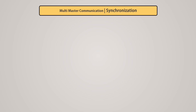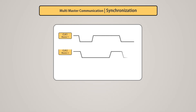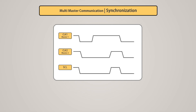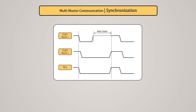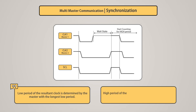The procedure to synchronize clock signals of two or more master devices is called synchronization. Like the SDA line, the SCL line is also logic high due to the pull-up resistor and acts as a wired-AND. When master 1 pulls the clock low before master 2, SCL becomes low. After master 2 also pulls the clock low, master 1 must wait until master 2 releases SCL before it can go high. The low period of the resultant clock is determined by the master with the longest low period, and the high period is determined by the master with the shortest high period.